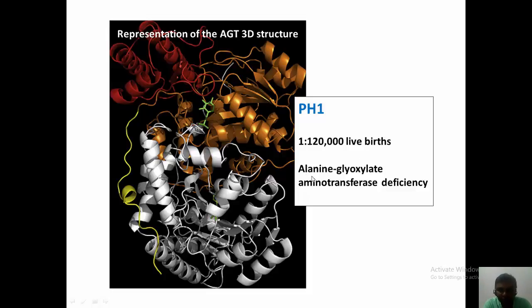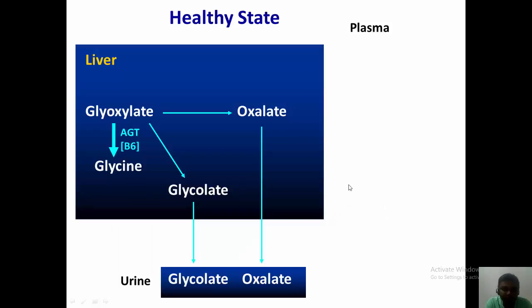The incidence rate of PH1 is around 1 per 120,000 live births, and it is of course due to deficiency of alanine glyoxylate aminotransferase.